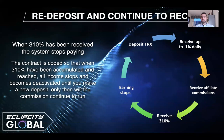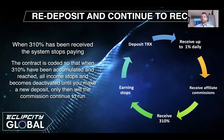You can redeposit and continue to receive as well, because when 310% has been received the system will stop paying. You have now received the support you were entitled to — no more, no less. The contract is coded so that when 310% has been accumulated, all income stops. That includes the daily 1% and any affiliate commissions you may be receiving.